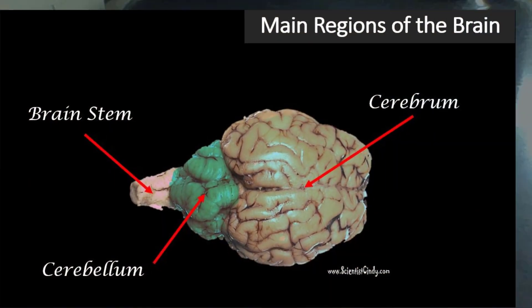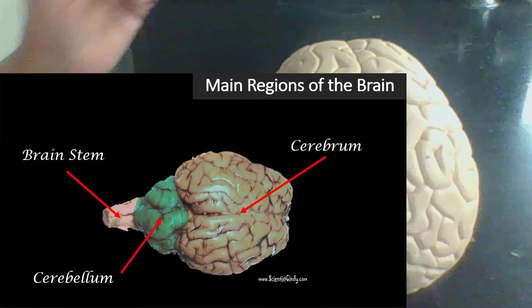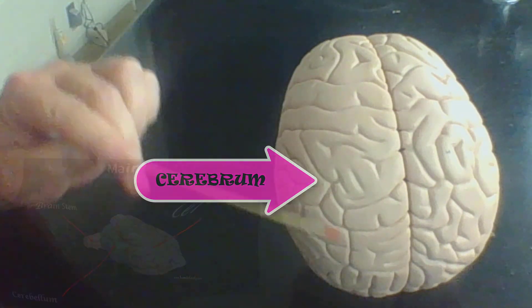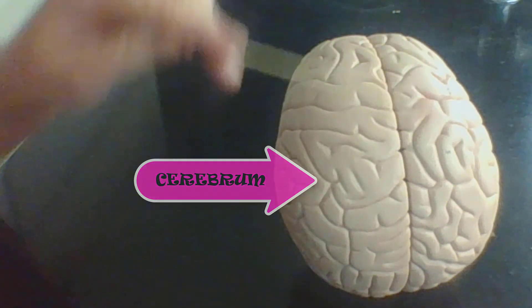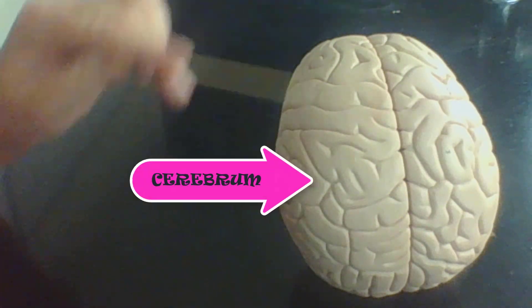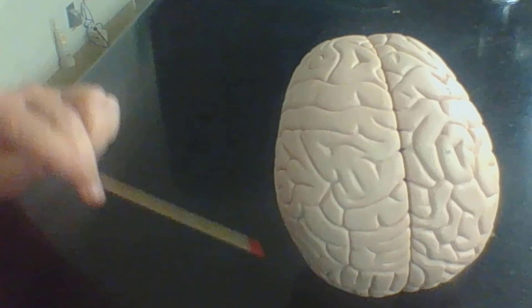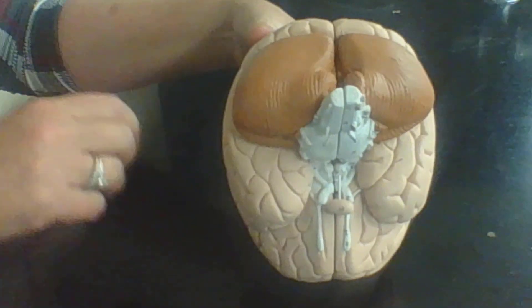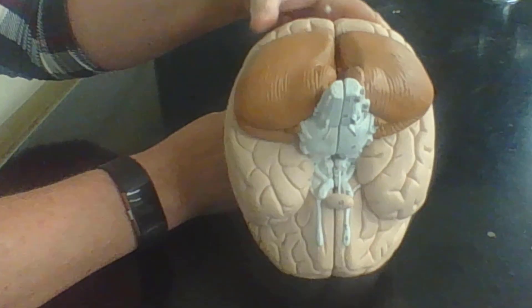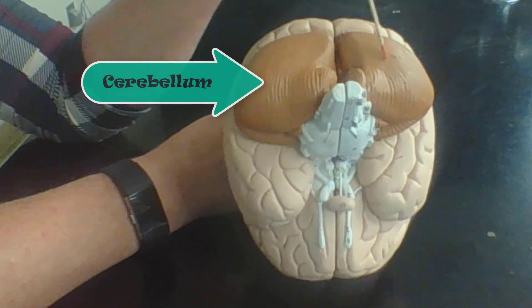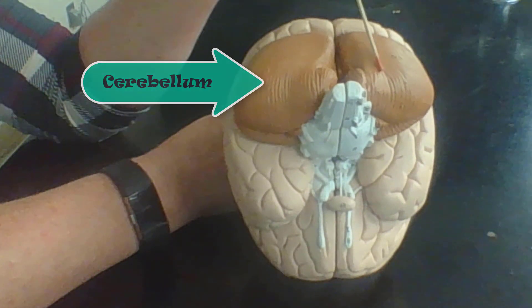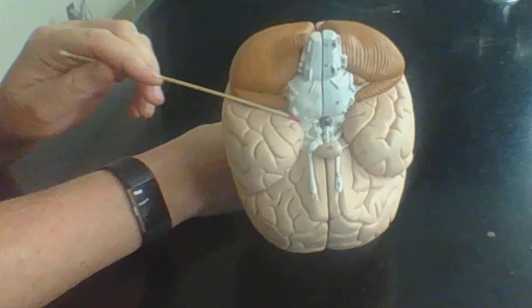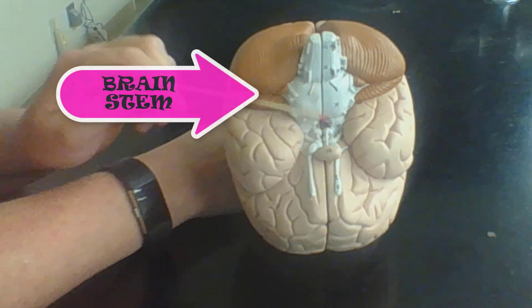There are three main regions of the brain. The largest area of the brain is the cerebrum. In addition to the cerebrum, we also have the cerebellum. Cerebellum means 'little brain' in Latin. And the brain stem — this is the brain stem here.